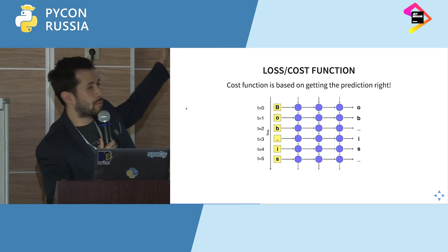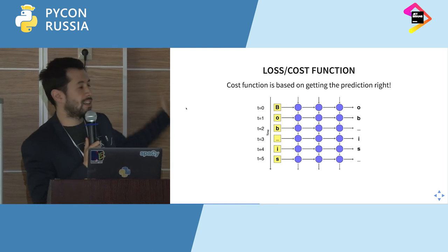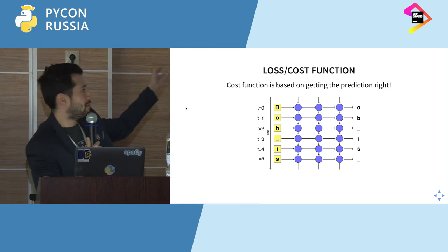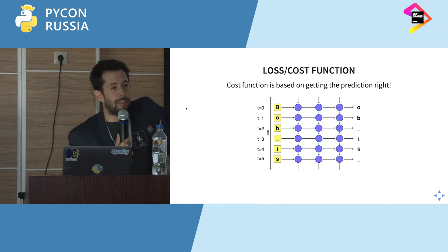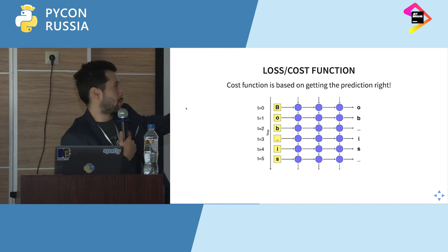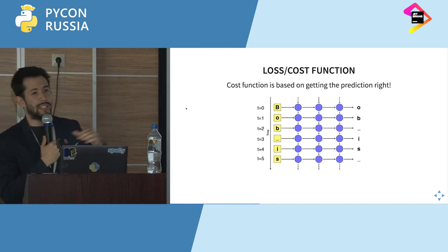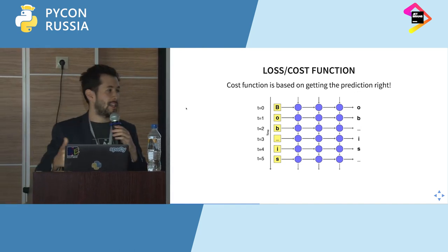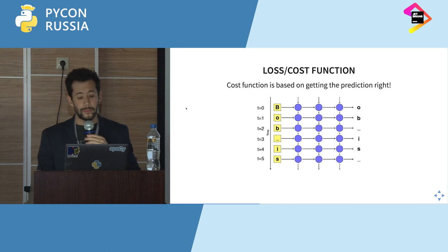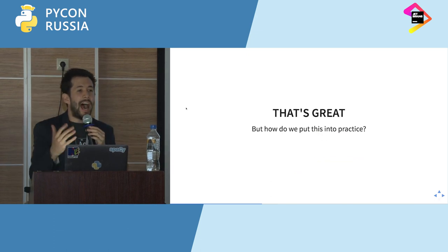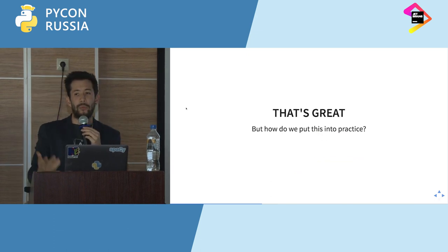The cost function is simple: once you give it an input and get an output, did it predict the correct one? In this case, we're predicting text — you give a letter 'B', it tries to predict the next letter is 'O', otherwise cost is added. That's great, but how do we put this into practice?